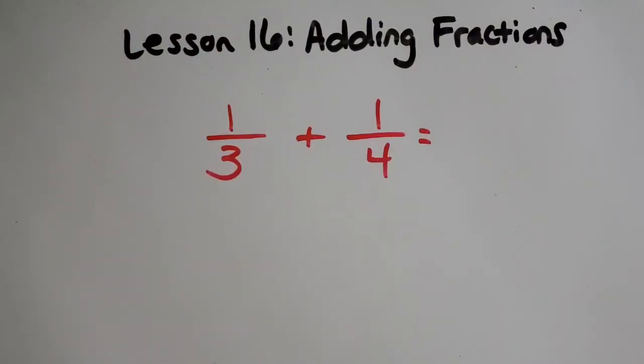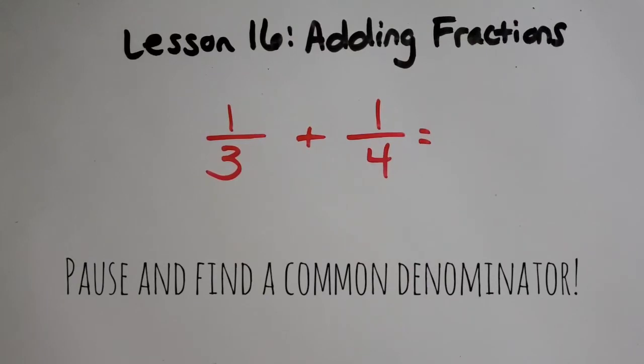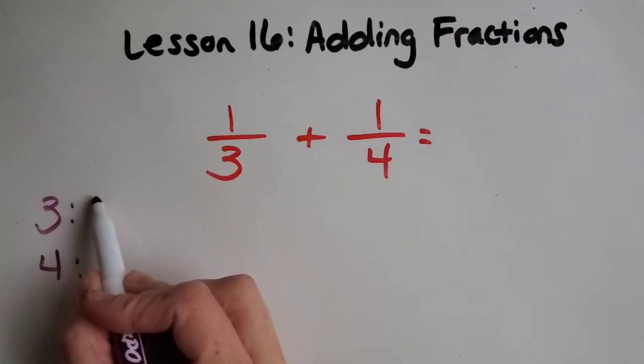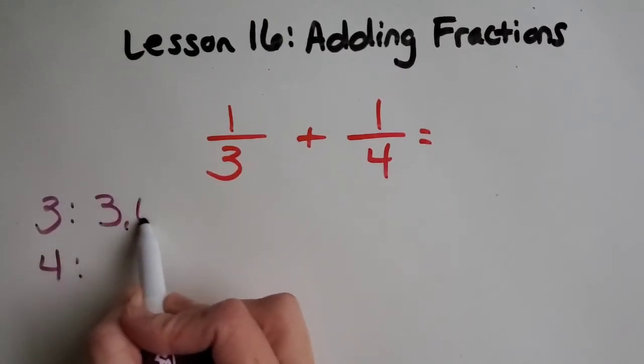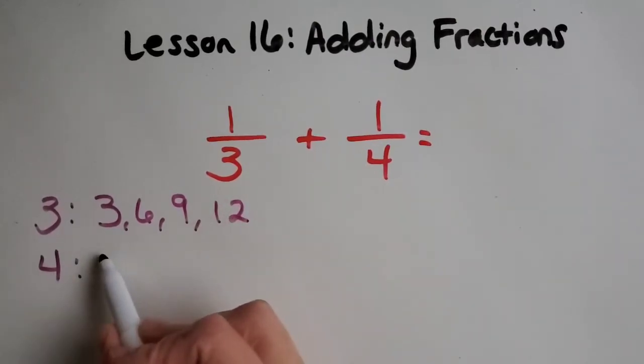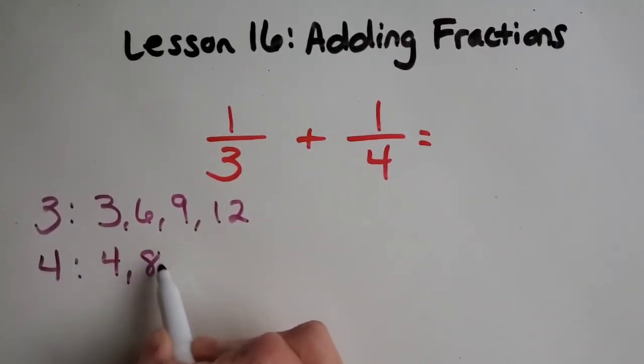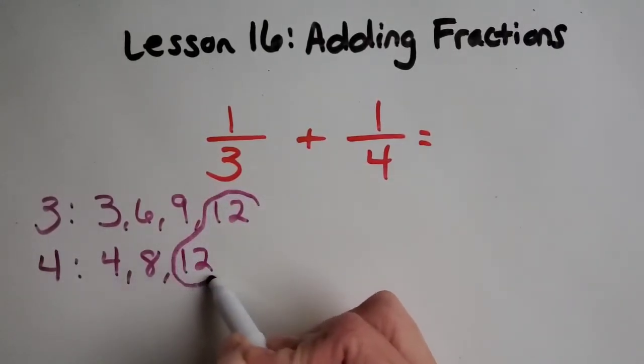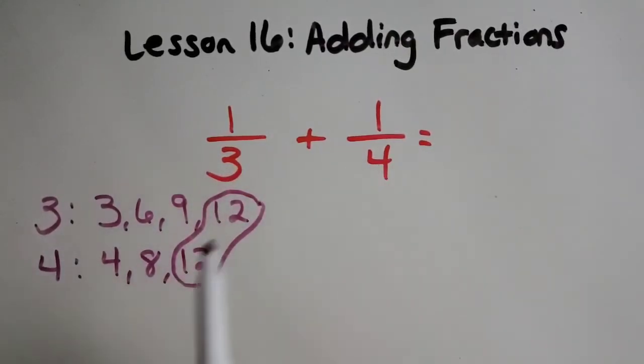Now I wanted to give you guys a problem of one-third plus one-fourth. And I want you to pause the video and see if you can find a common denominator. Let's see how you did. Let's count by threes. And then let's count by fours. We found what they have in common is 12.